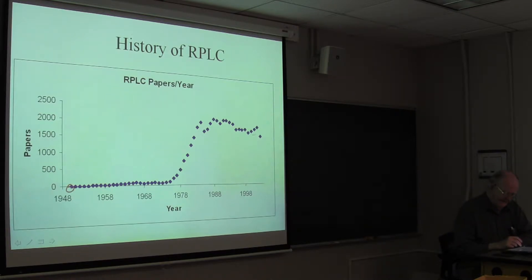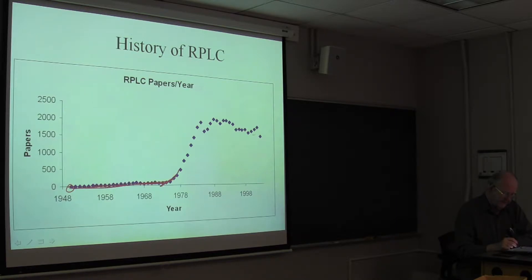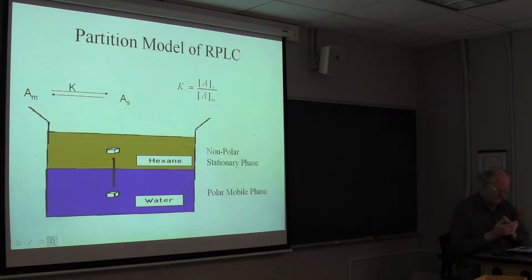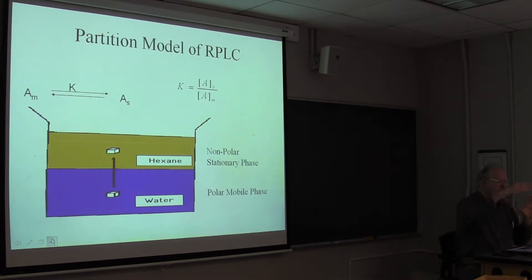Not many papers came from that early work, and not a whole lot happened — it was all normal phase or ion exchange. Then HPLC happened, and some researchers got a bright idea of how to make really good silanized silica gels for doing reverse-phase chromatography, and the world changed. Even though the stationary phase may be a solid, what you really want to do is think about that solid — especially if it's got a C18 bonded to it — as like a liquid, a monolayer of liquid.